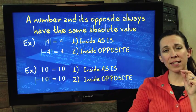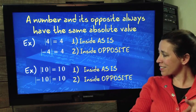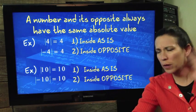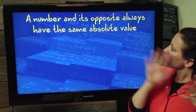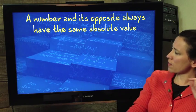One is as is or positive. The other one is the opposite. Same thing here. Absolute value of 10 is 10. What other number has an absolute value of 10? Good. Negative 10, its opposite. So, the inside as is or the inside has its opposite. A number and its opposite always have the same absolute value.